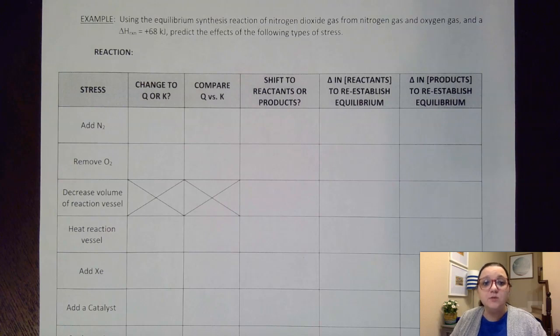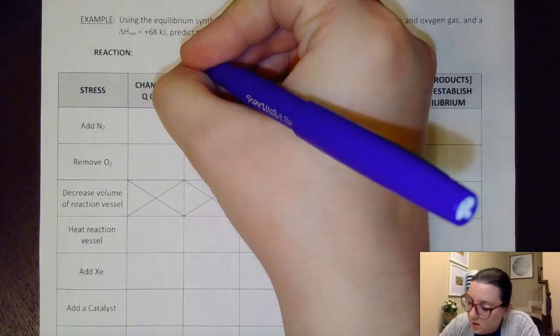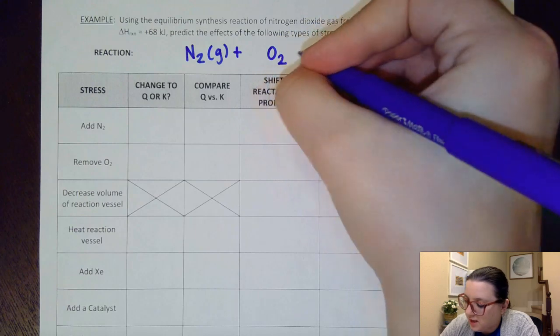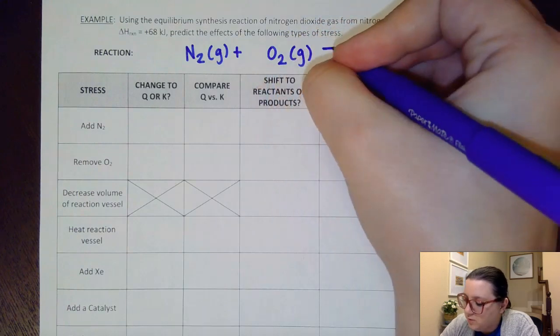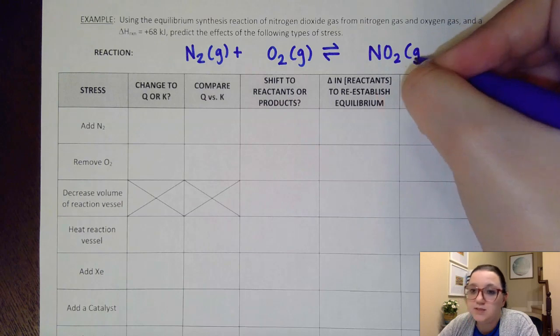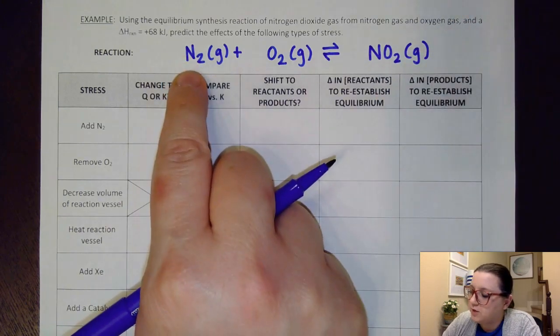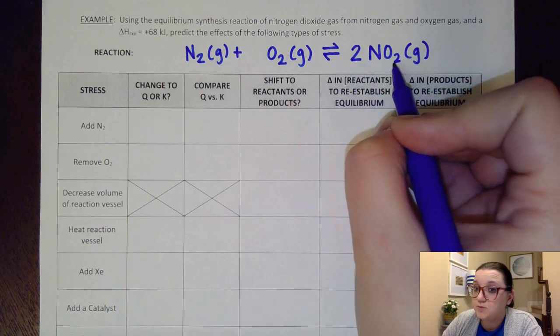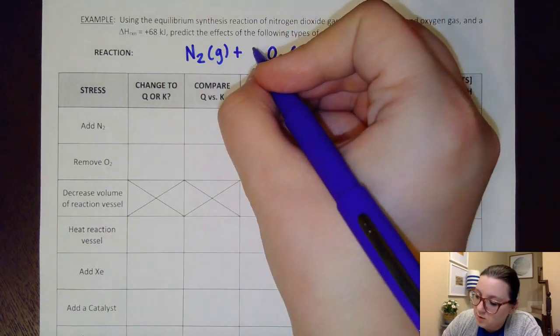So let's look at our example here. It says, using the equilibrium synthesis reaction of nitrogen dioxide gas from nitrogen gas and oxygen gas, and they give us a delta H of the reaction of a positive 68 kilojoules, we want to predict the effects of the following types of stress. So the first thing I'm going to do is I'm going to write myself a balanced equation. So I know I have N2 gas and O2 gas, there's my nitrogen gas and my oxygen gas, and I'm going to put a two-way reversible arrow here, and that is making NO2, nitrogen dioxide gas. Now I do need to balance this. I see I have two nitrogens over here, so on my product side I need to put two NO2, and as a result of putting that two here, that doubles my amount of oxygen, so therefore I need to come over here on my reactant side and put a two.